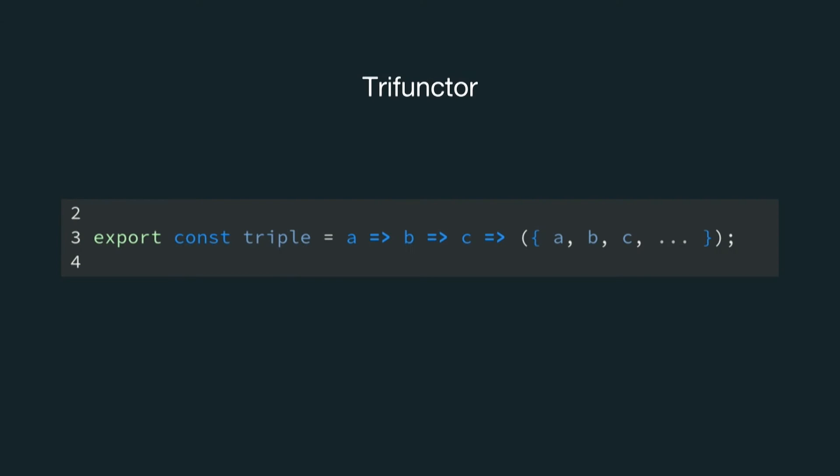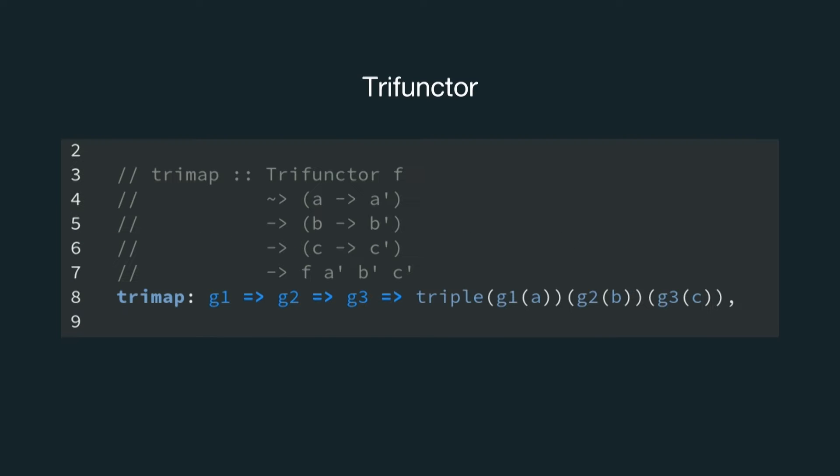If you want to represent a tri-functor in JavaScript, we can simply base it on something as simple as this. And it being a functor, we need to implement a map function — or in this case a tri-map. So if we tri-map over the triple instance with three functions, we'll get back a new triple instance with values being the result of applying those functions to the instance values.